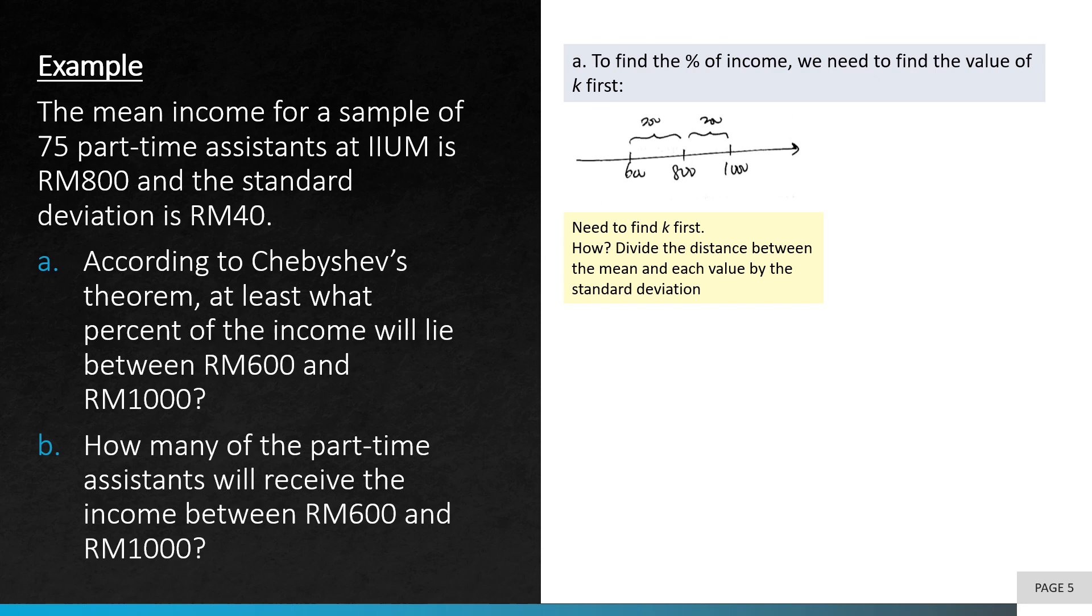Remember what k is? k is basically the distance from the mean, but in terms of standard deviation. So to find k, we take the distance between the mean and divide it by the standard deviation. So 200 over 40, we get 5. The next step is to substitute this k into the formula of Chebyshev's theorem, which is 1 minus 1 over k squared. And we'll get 0.96. What that means is we can say that at least 96% of the income will lie between RM600 and RM1000.